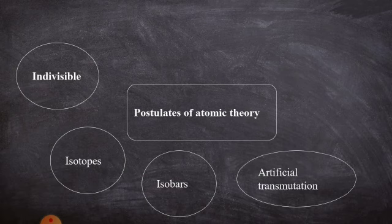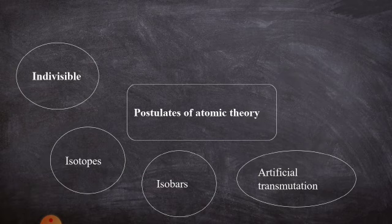The next postulate is artificial transmutation. What is artificial transmutation? The conversion of one element into another element by an artificial method is said to be artificial transmutation. For example, if you bombard an alpha particle with nitrogen, you will get oxygen. This is an example of artificial transmutation.